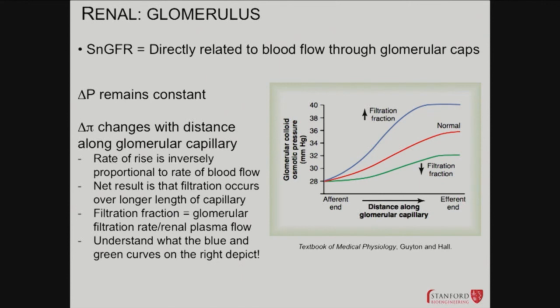One way to graphically represent and think about this is shown here. What's plotted is the oncotic or osmotic pressure of the glomerular colloid versus what's present in the filtrate, as you go along the glomerular capillary. With a normal process, you see a characteristic curve. If you have decreased filtration, the curve is shifted down. If you have increased filtration, it shifts accordingly.